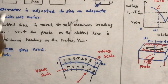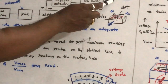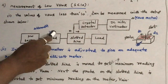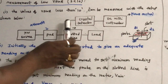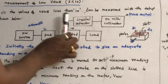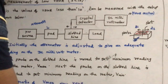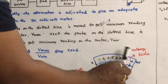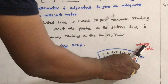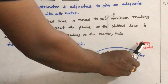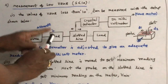If the VSWR meter is connected, we adjust both the variable attenuator (pad) and the probe on the slotted line until full scale deflection is seen on the VSWR meter. Once full scale deflection is obtained, keep the pad or variable attenuator fixed at that position — do not vary it further.